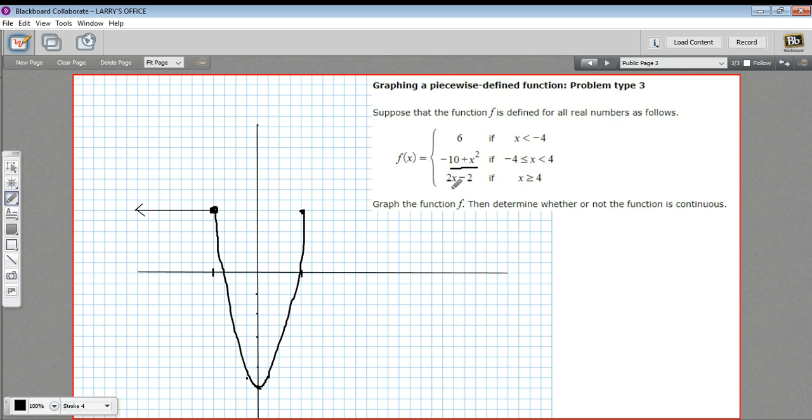The third piece is 2x minus 2. And that's the equation for a line. And this is when x is greater than or equal to 4. So starting here, it's going to go up at a slope of 2 and then be minus 2. So let's see what happens here if we put in the value of 4. So 2 times 4 is 8 minus 2 is 6.